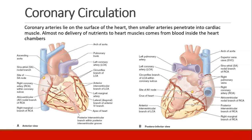The heart muscle receives its blood supply not from the blood inside the heart chambers, but from the coronary arteries that lie on the surface of the heart, and then smaller arteries that penetrate deep into the cardiac muscle. Virtually no delivery of nutrients to heart muscles comes from blood inside the heart.